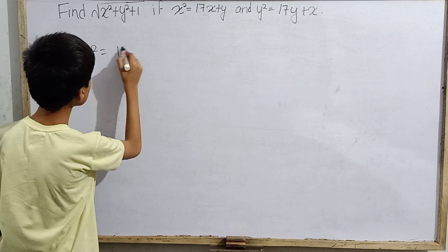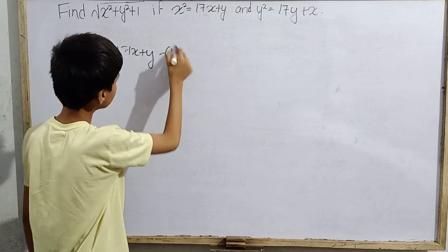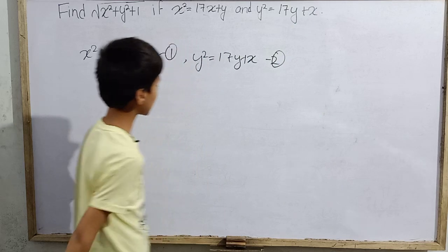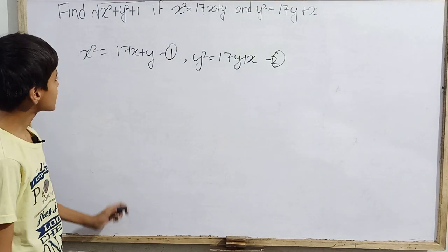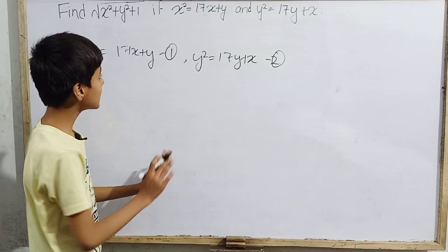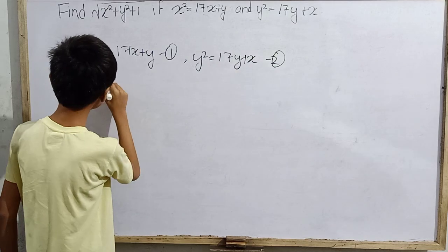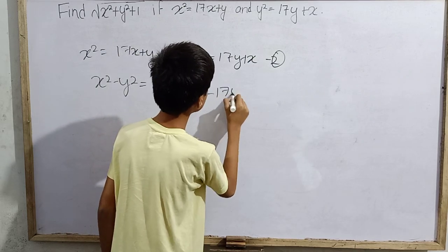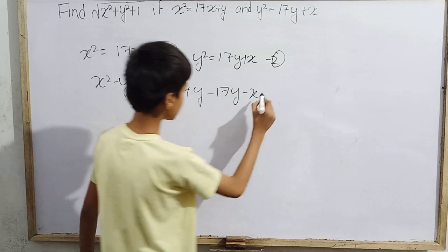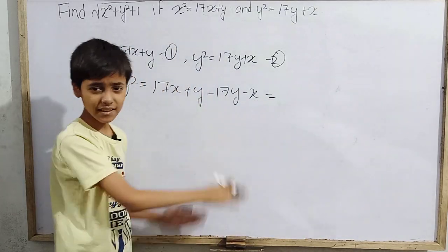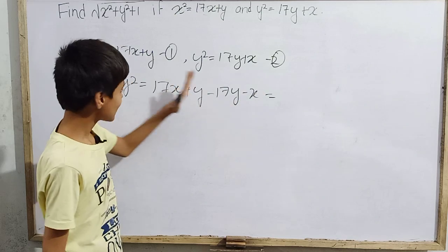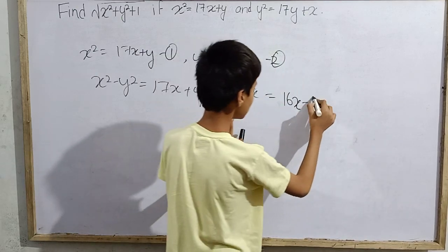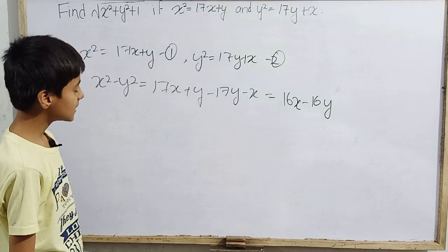What we do is treat x² = 17x + y as equation 1 and y² = 17y + x as equation 2. Subtracting equation 2 from equation 1 gives: x² − y² = 17x + y − 17y − x, which simplifies to 17x − x = 16x and y − 17y = −16y, so x² − y² = 16x − 16y.